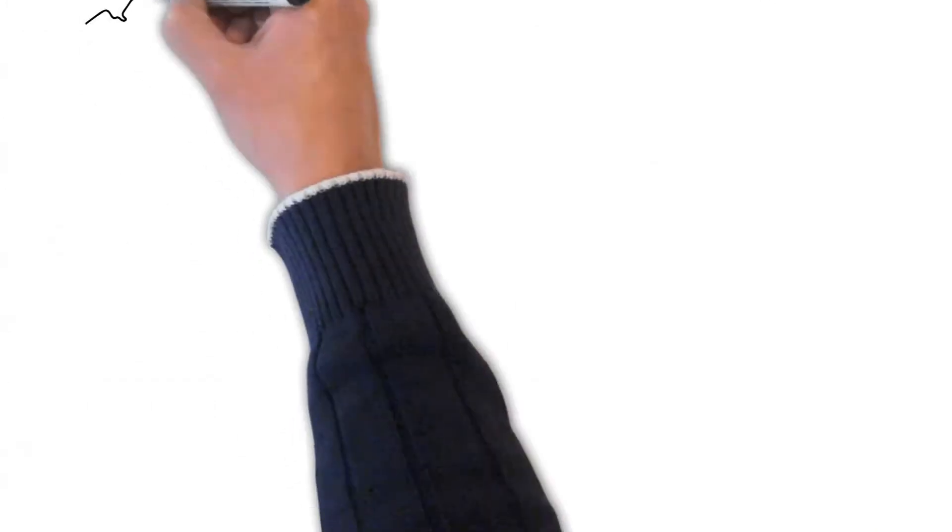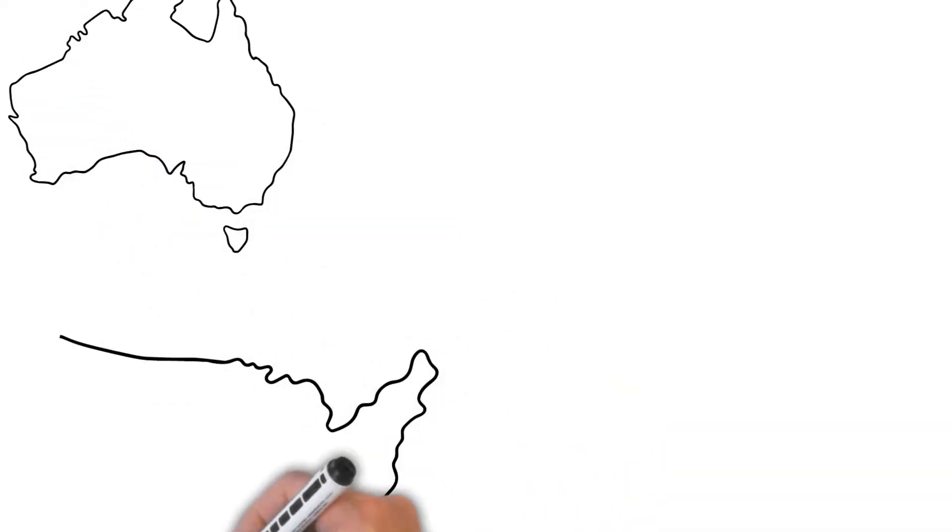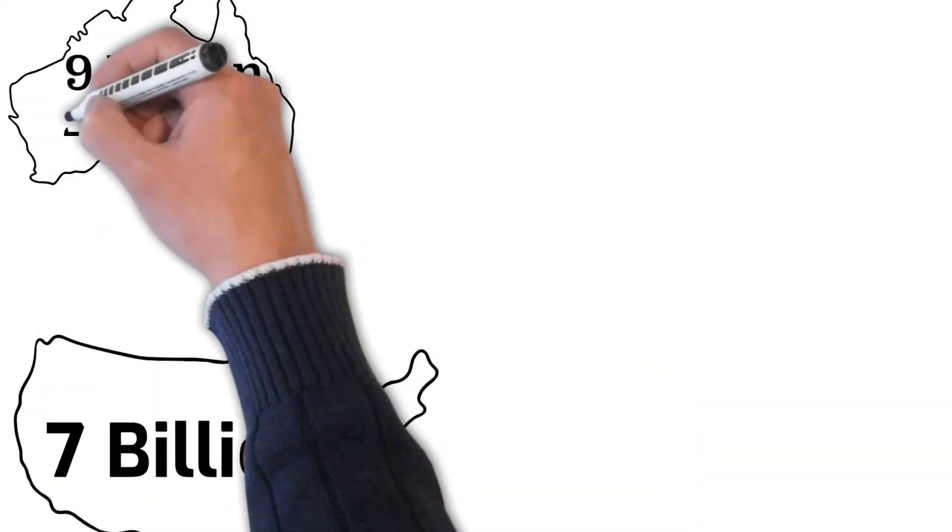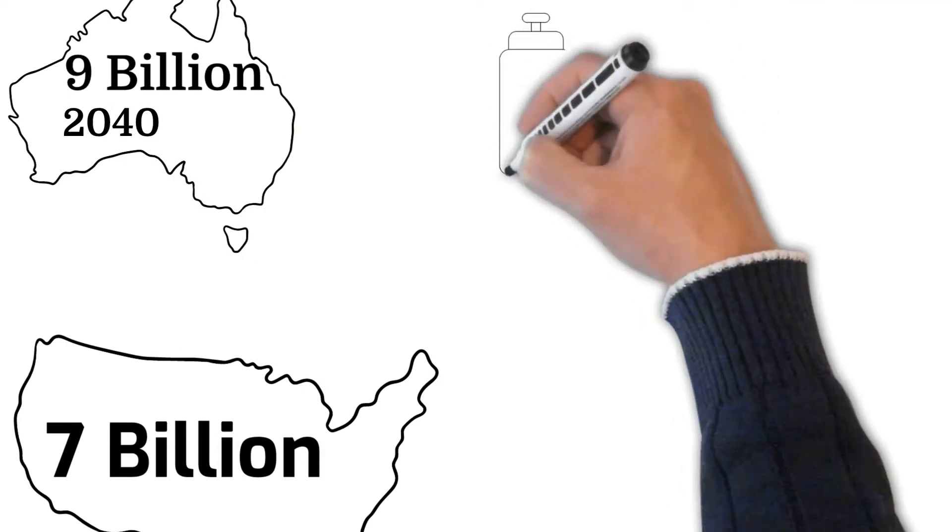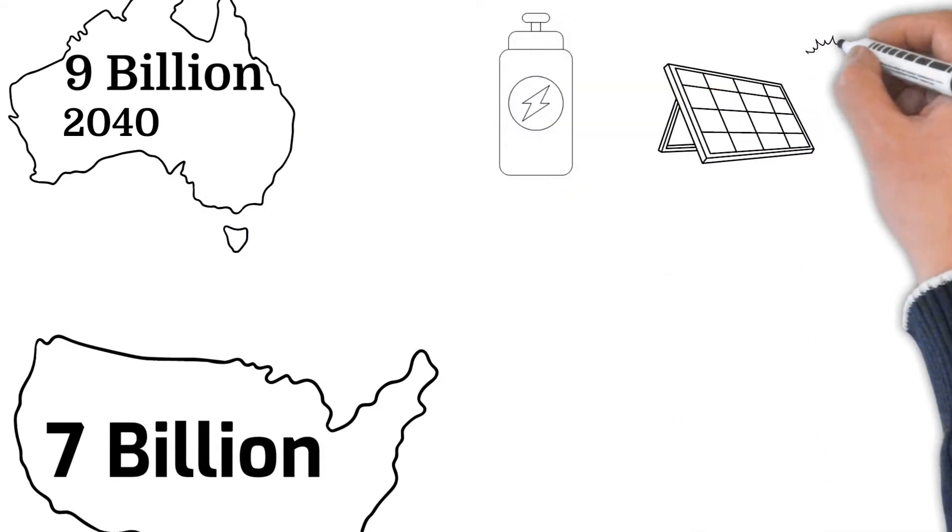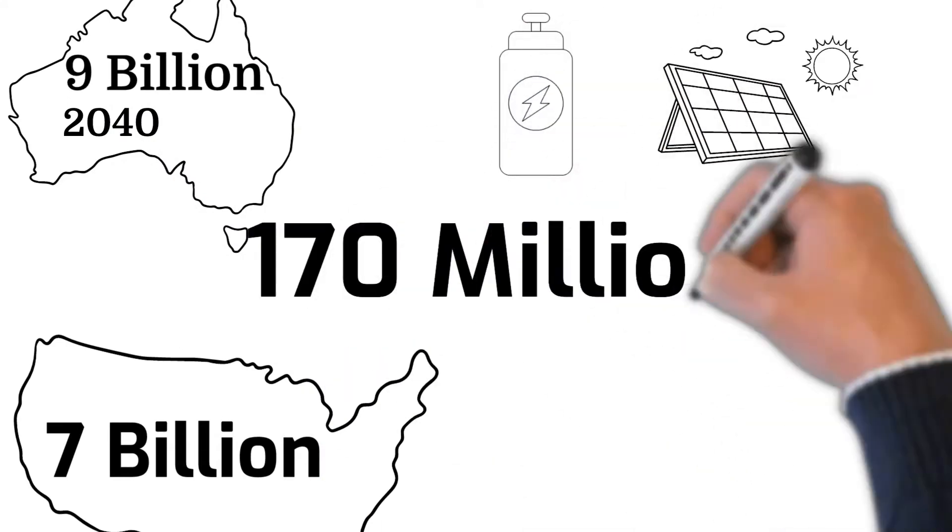The world is a big place and it's home to about 7 billion people. In the next two decades, two more billion are coming to join the party. To keep that party going, we need a lot of energy. Currently, we need to produce 170 million gigawatts of energy.